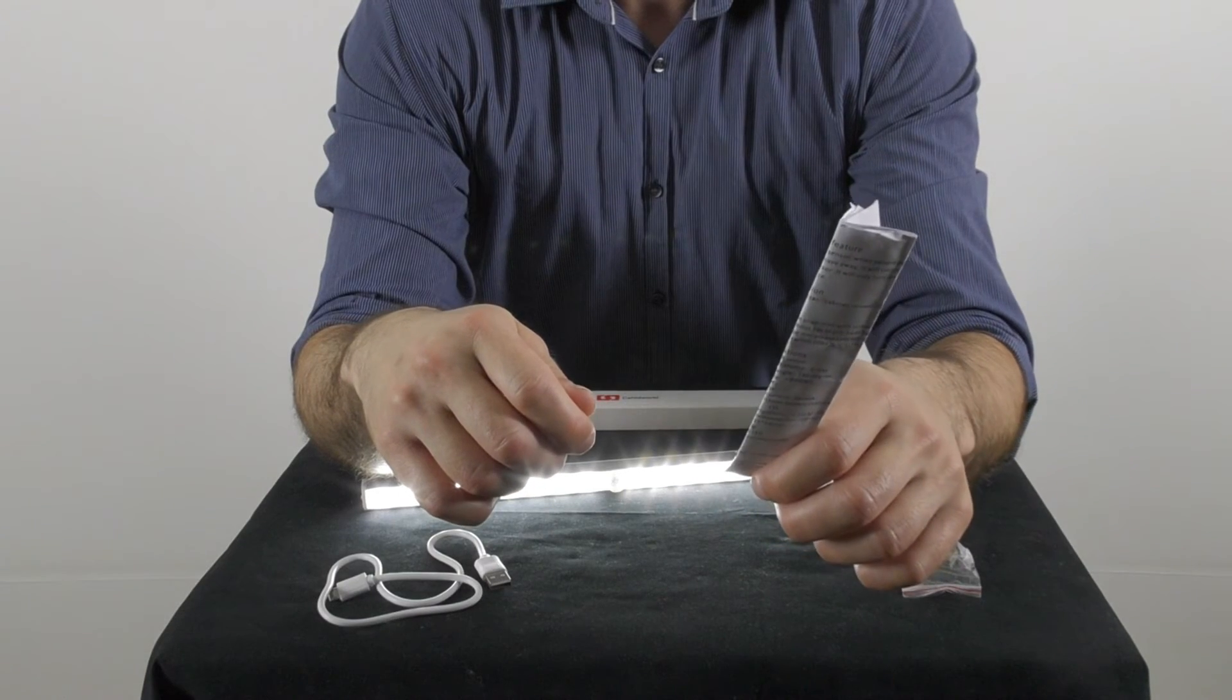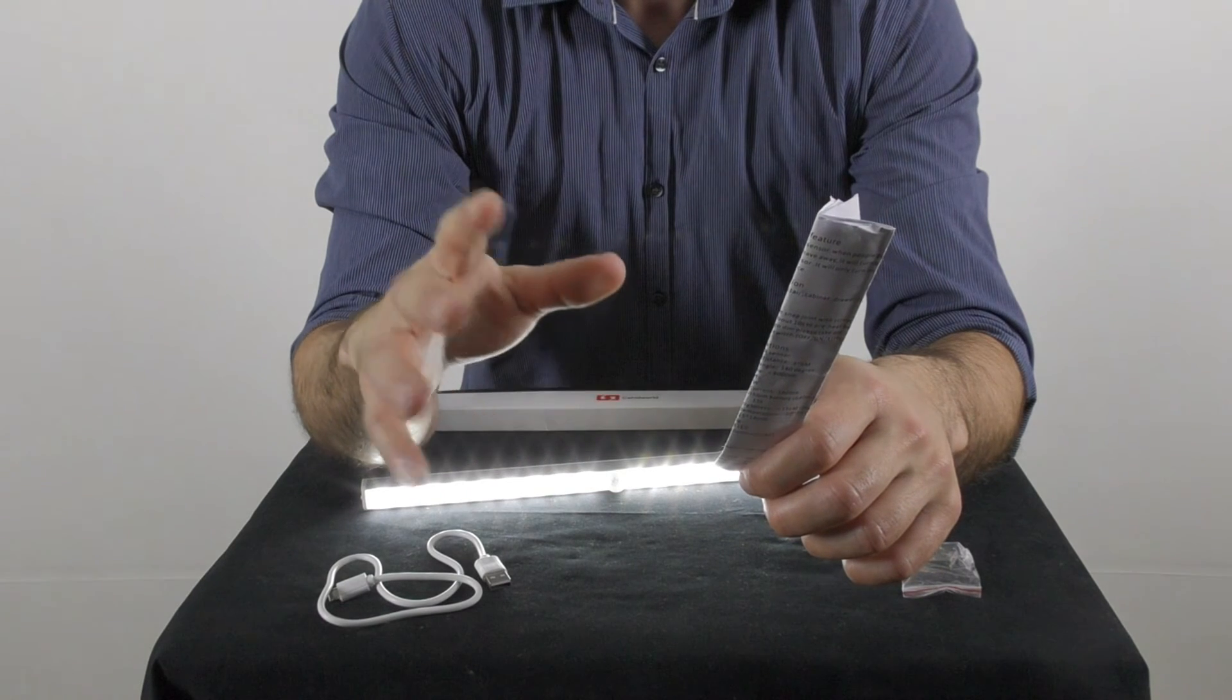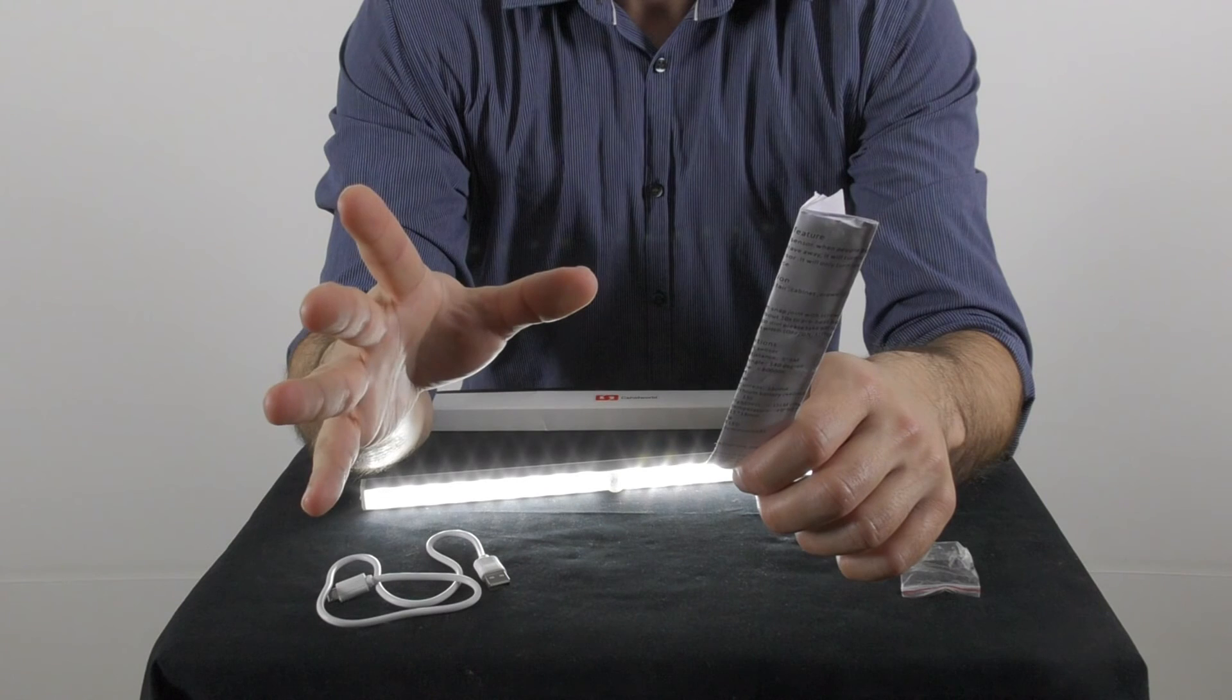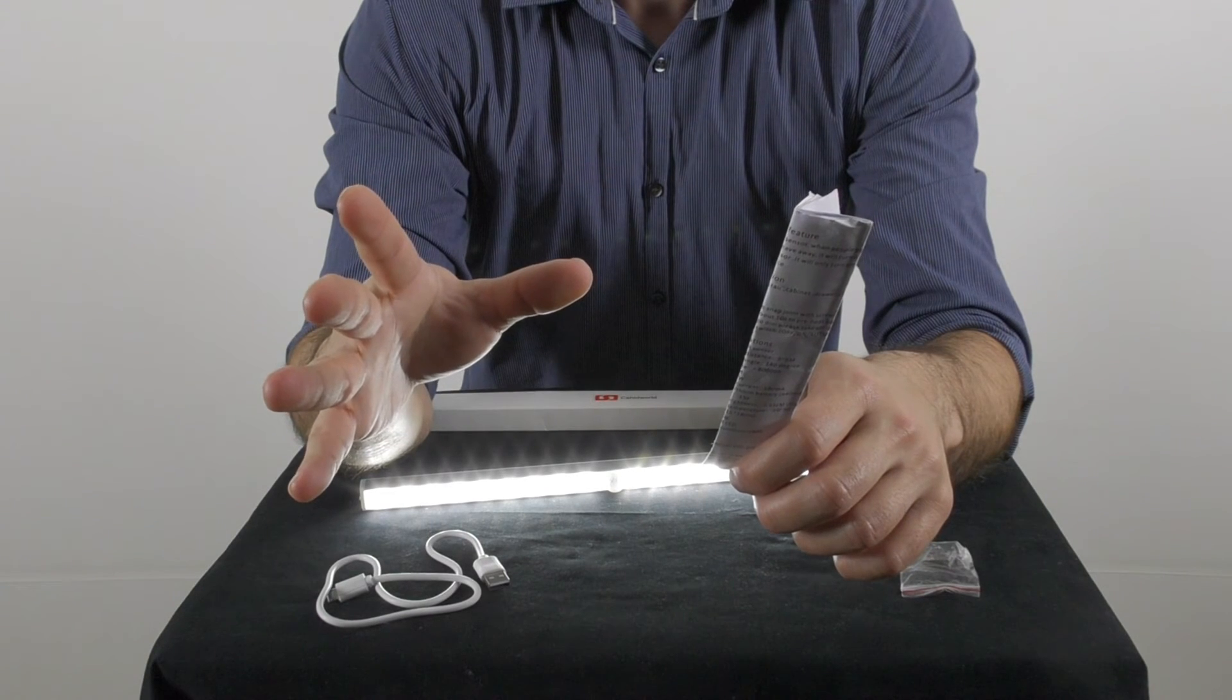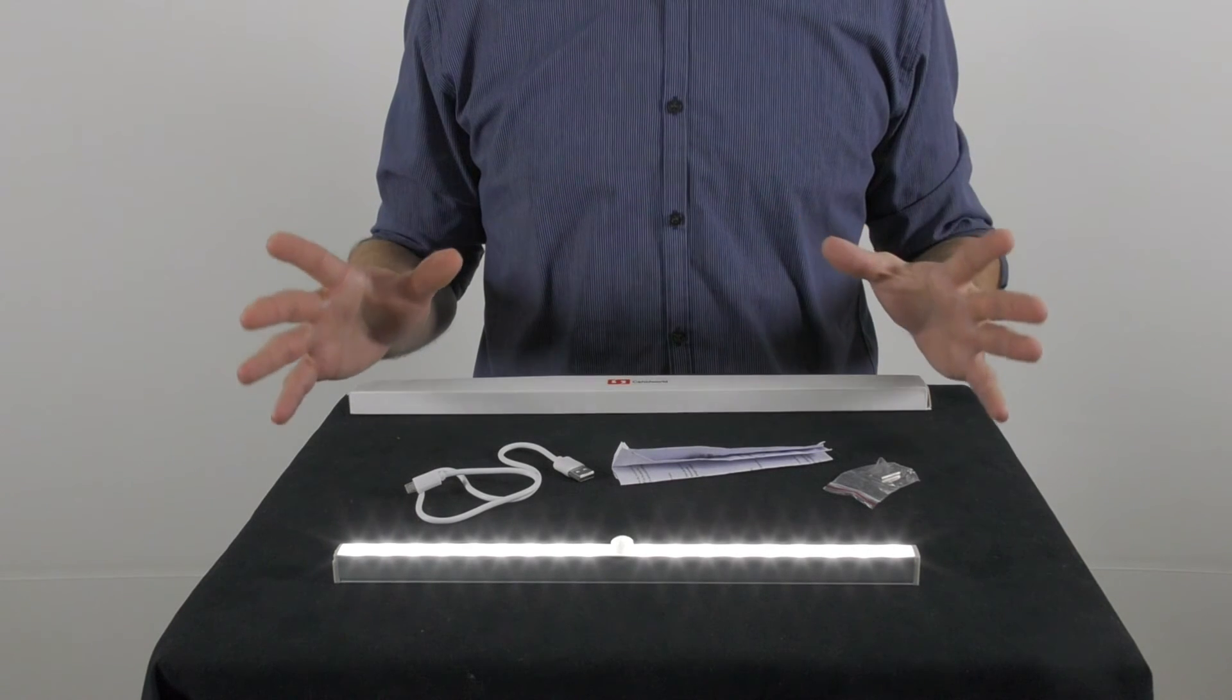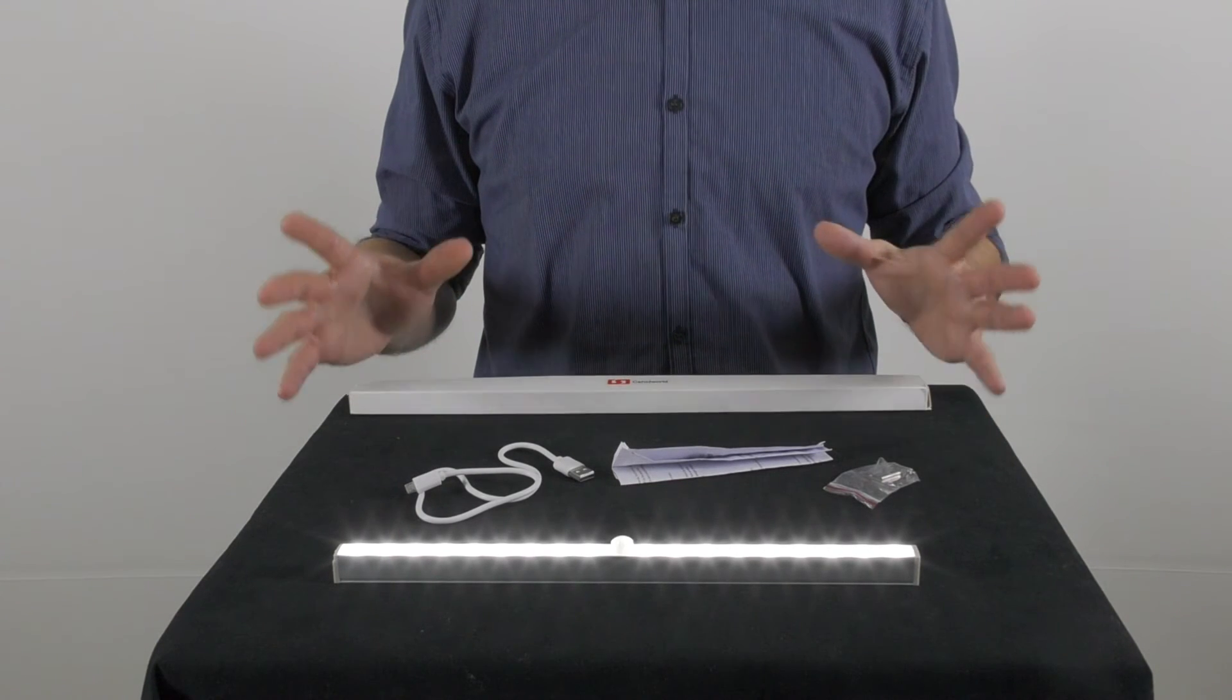Also supplied with the light bar is a user manual in English. Please note, the light bar is recommended for indoor use only and it's recommended to keep it away from high humidity places. Overall, this is a really useful gadget. It's compact, easy to operate, and can be used as a great illumination solution for various scenarios.